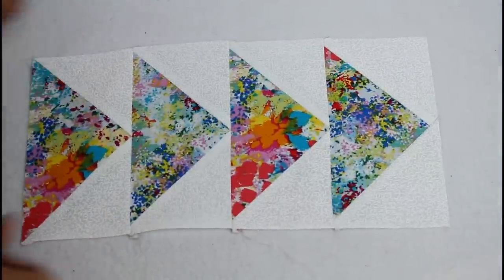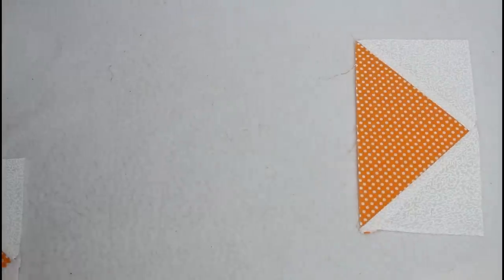Press all the seam allowances toward the darker fabric. Repeat the same steps with the remaining four pieces.